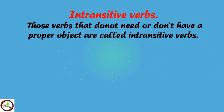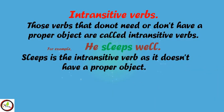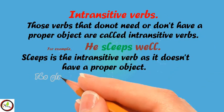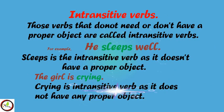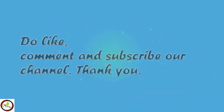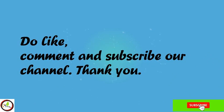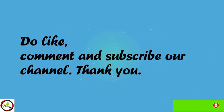Intransitive verbs are those verbs that do not need or don't have a proper object. For example, in the sentence 'He sleeps well,' sleeps is an intransitive verb as it doesn't have a proper object. Another example: in the sentence 'The girl is crying,' crying is an intransitive verb as it does not have any proper object. Hope this video was useful to you. Feel free to ask if you have any queries related to verbs. Please like, comment, and subscribe to our channel. Thank you.